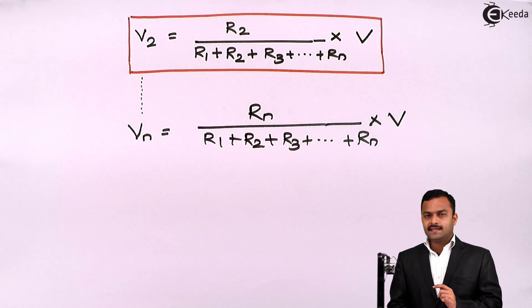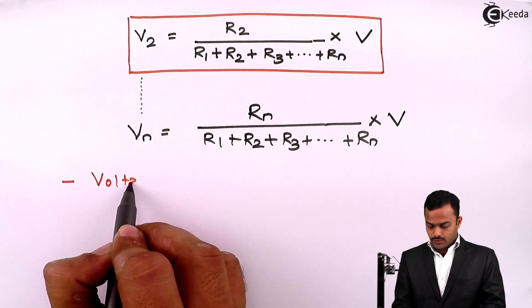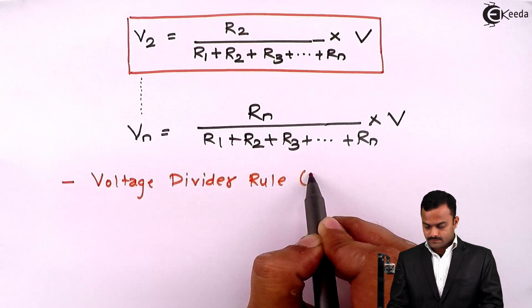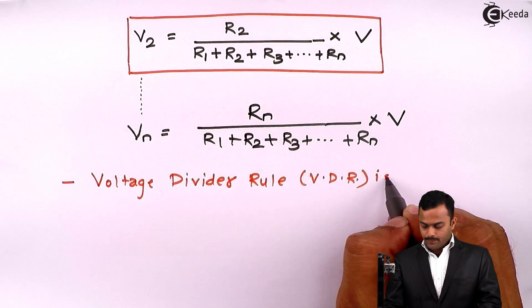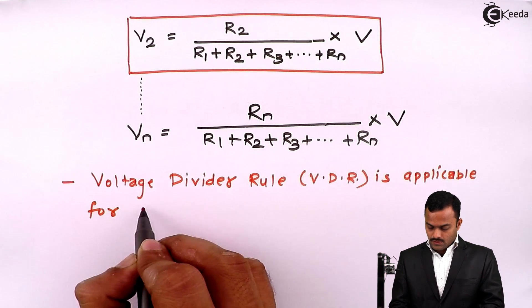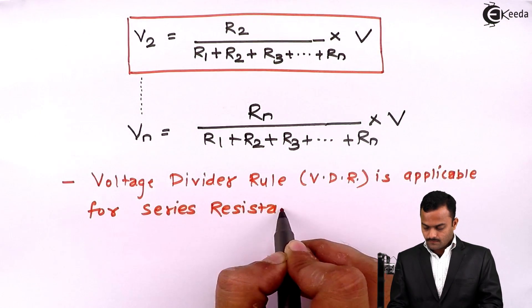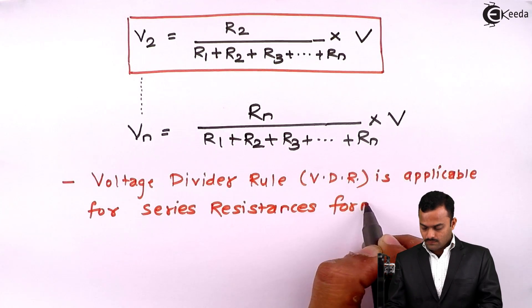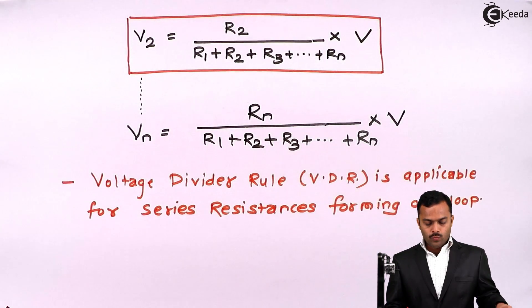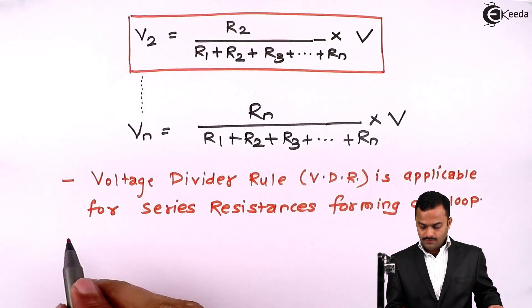Certain things we need to keep in mind. Voltage divider rule, popularly known as VDR, is applicable for series resistances forming one loop. So only one loop it should form and number of resistances should be in series.